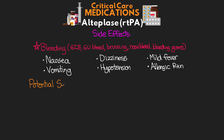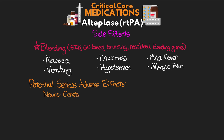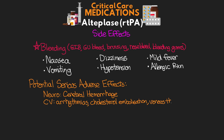There are also some potentially serious adverse effects, many related to bleeding. Neurologically, we are worried about cerebral hemorrhage. In the cardiovascular system, we're concerned about arrhythmias, cholesterol embolization, and venous thrombosis. In the gastrointestinal system, we're worried about GI bleeds. Hematologically, systemic bleeding is a major concern, and patients are also at risk for anaphylaxis.